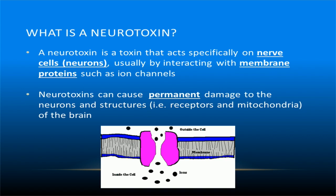Neurotoxins are toxins which act specifically on nerve cells, usually by interacting with membrane proteins such as ion channels. They can cause permanent damage to neurons and structures of the brain. This means that a neurotoxic chemical is any chemical which adversely affects the nervous system or brain.